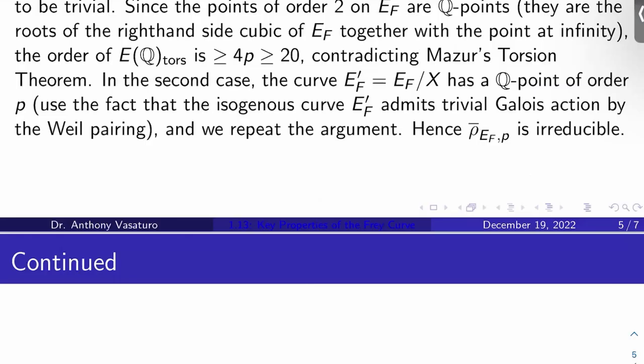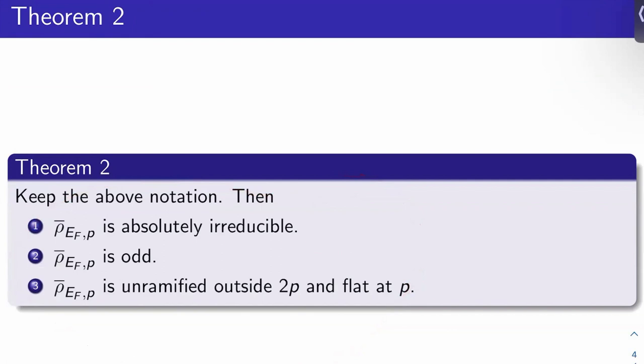So digest these. These are the three kind of key properties of the Frey curve attached to a non-trivial solution of the Fermat equation with exponent of prime P at least 5 that we're going to need to finish the proof of Fermat's theorem. So we'll start talking about Galois representations attached to cusp forms next video. So I'll see you then. Thanks for watching.